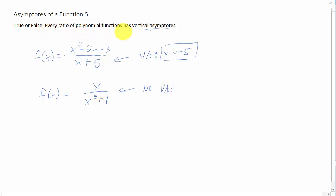So that does make the answer to this question false. But there's still another example of a ratio of polynomial functions that doesn't have a vertical asymptote.